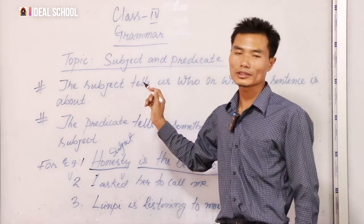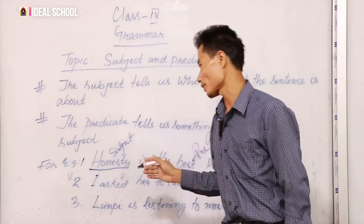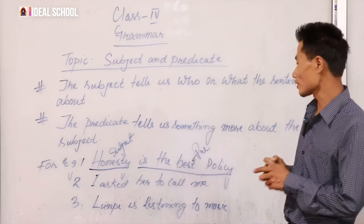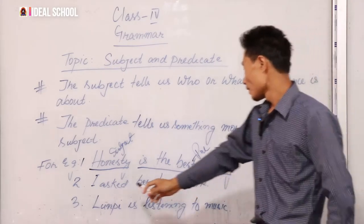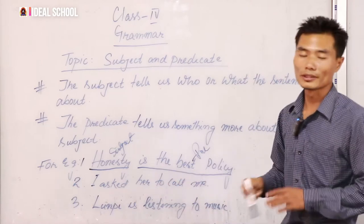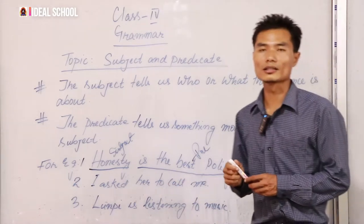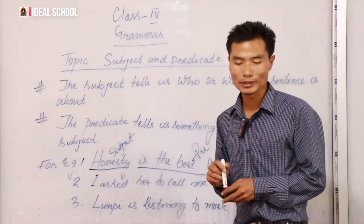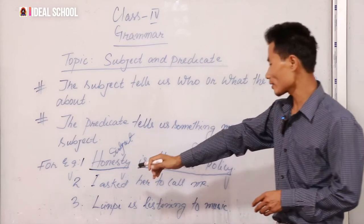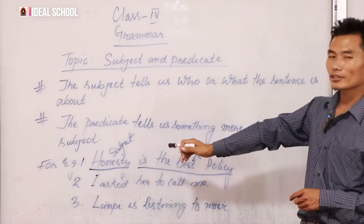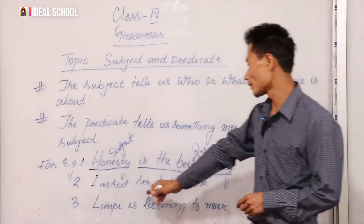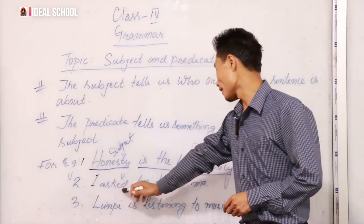The remaining part — 'is the best policy' — will be a predicate, and 'honesty' will be the subject. The subject tells us about mostly a noun. Don't forget it. The second example is: 'I asked her to call me.'